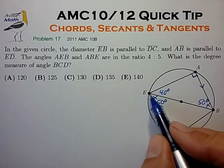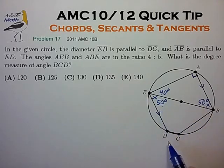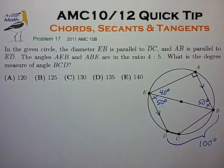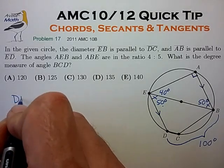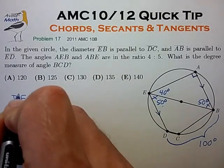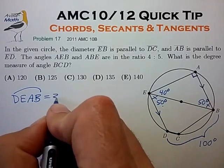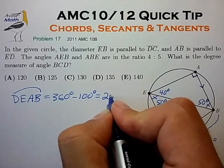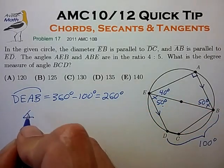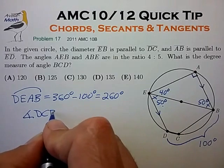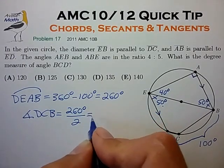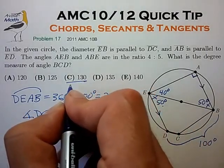Since we know angle DEB is 50 degrees, we know that the minor arc DCB is 100 degrees. From that we can calculate the major arc DEAB to be 360 degrees minus 100 degrees, which is 260 degrees. From that we can then calculate angle DCB as 260 degrees divided by 2, giving us 130 degrees — choice C.